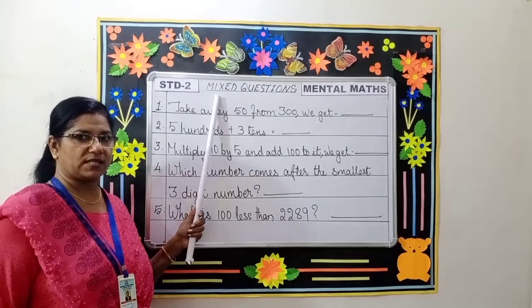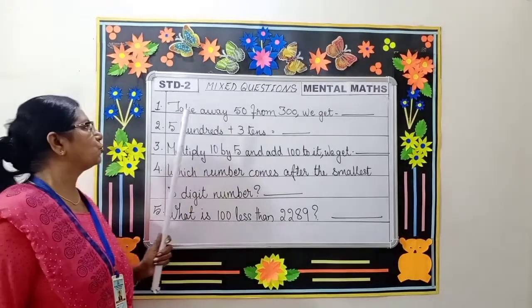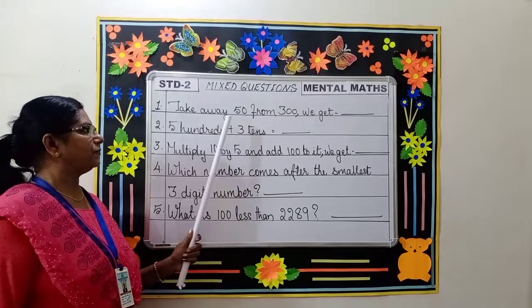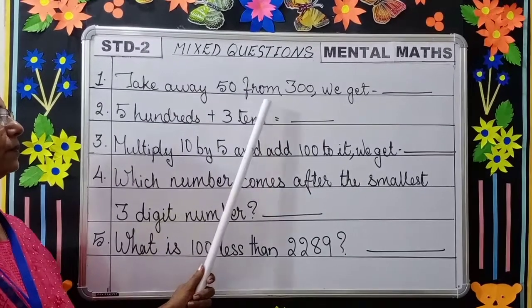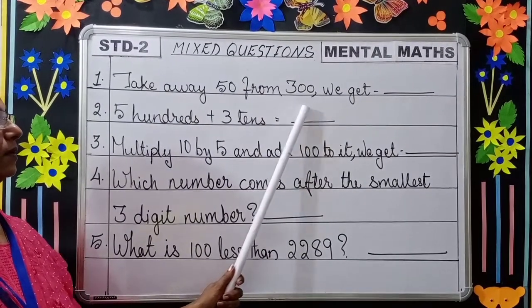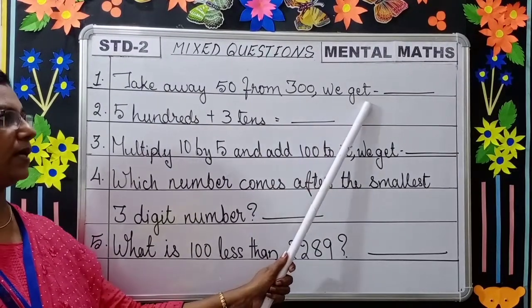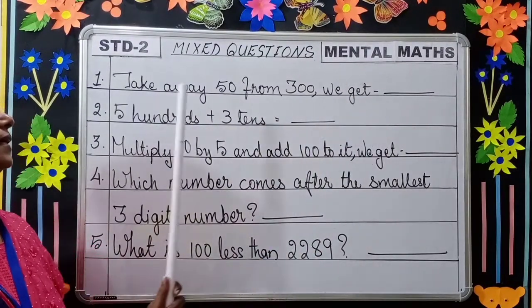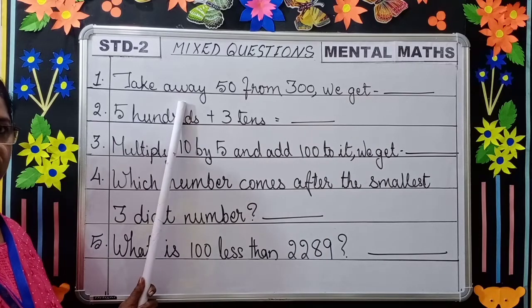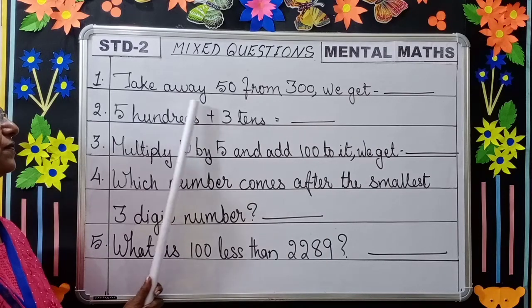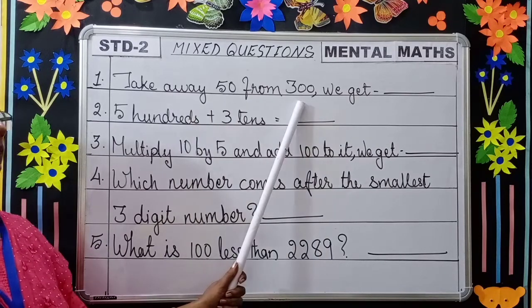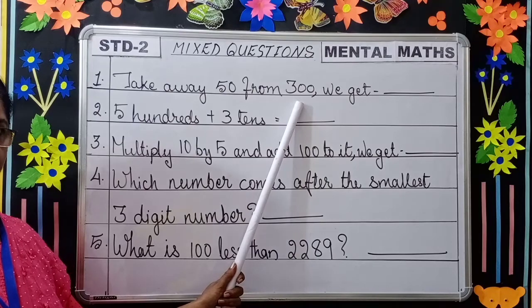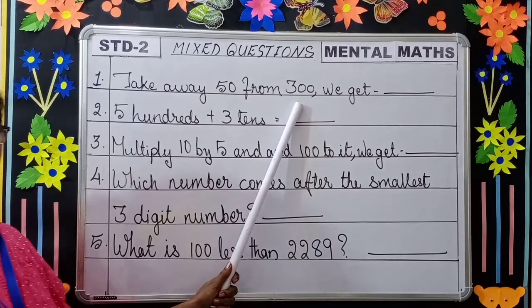Mixed questions. Question number one: take away 50 from 300 — we get dash. Take away means you have to subtract 50 from 300. You will get 250.